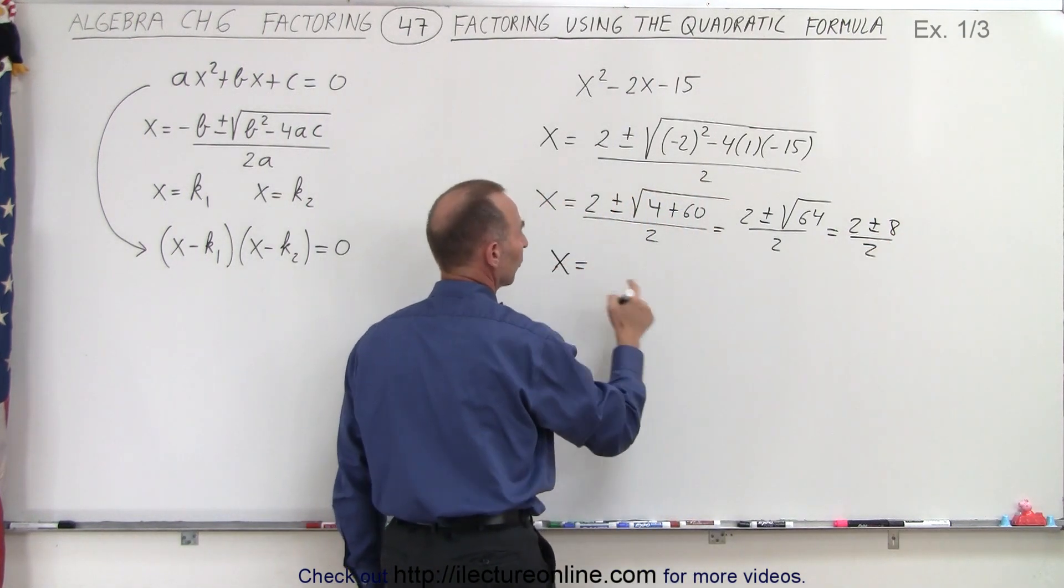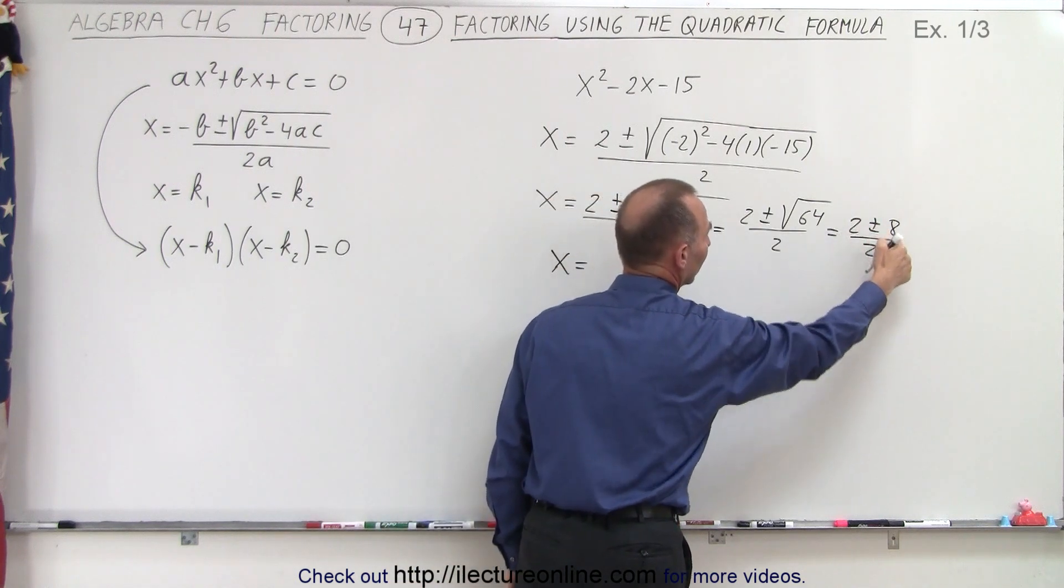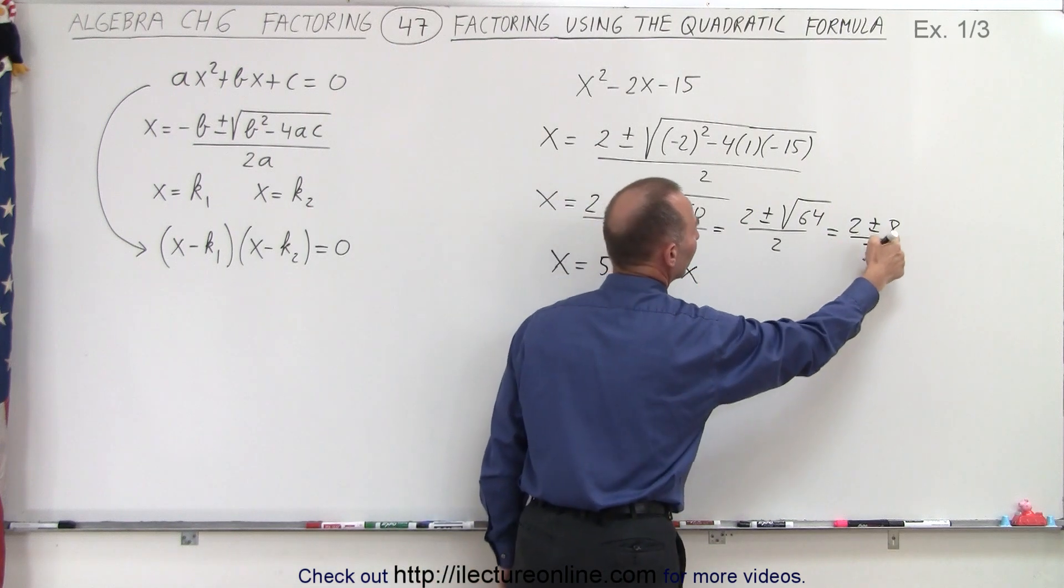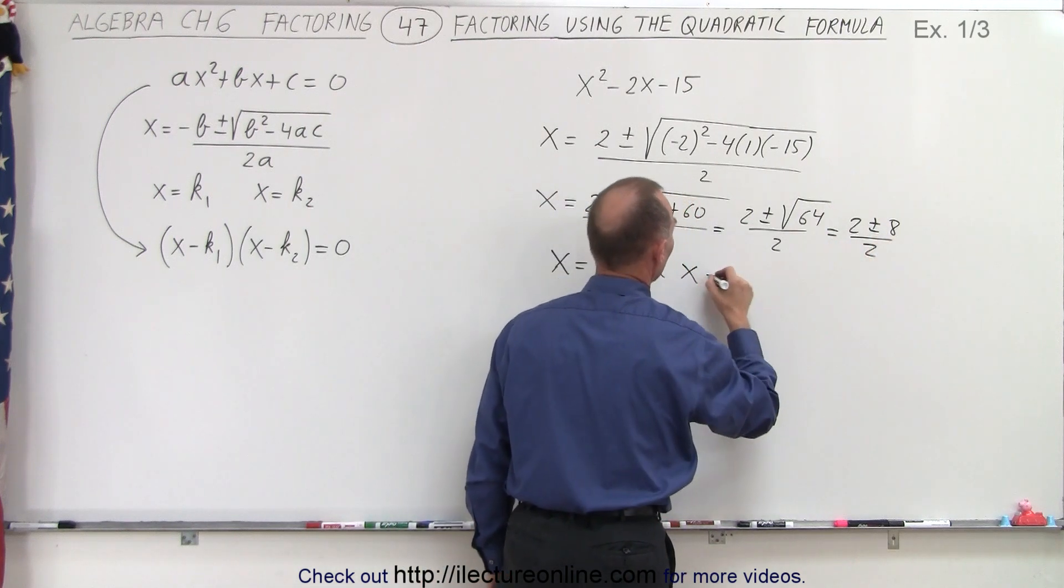x is equal to, the first result, 2 + 8 is 10, divided by 2 is 5, or x = 2 - 8 is -6, divided by 2 is -3.